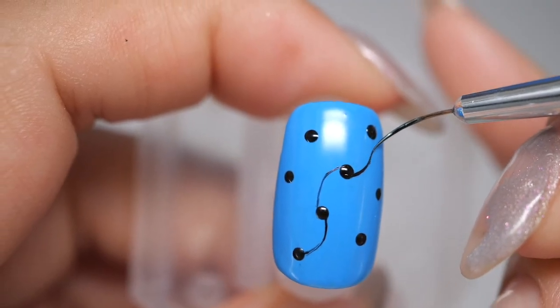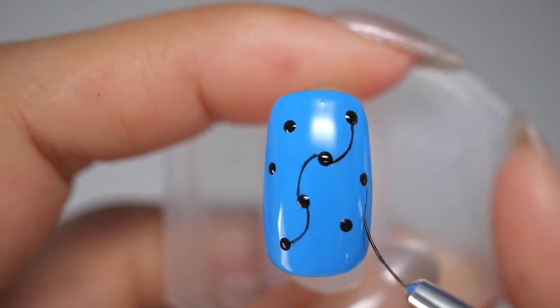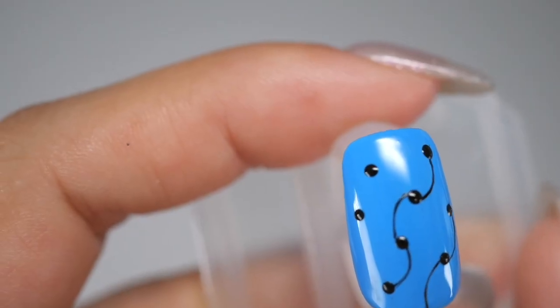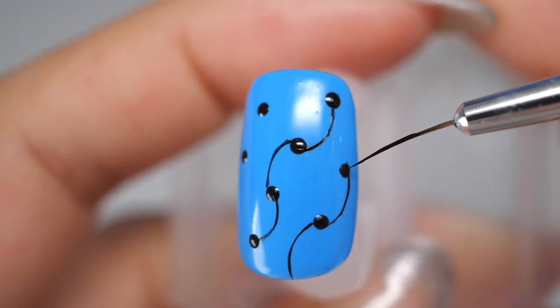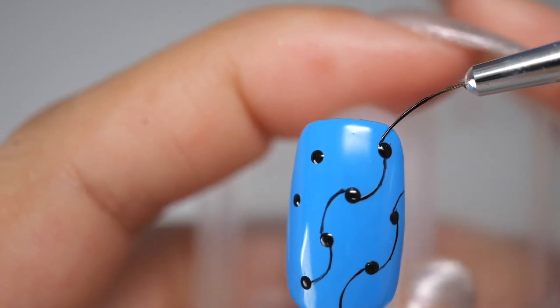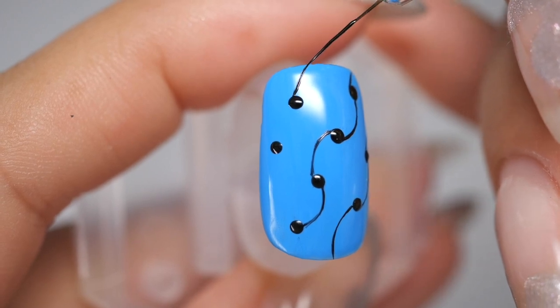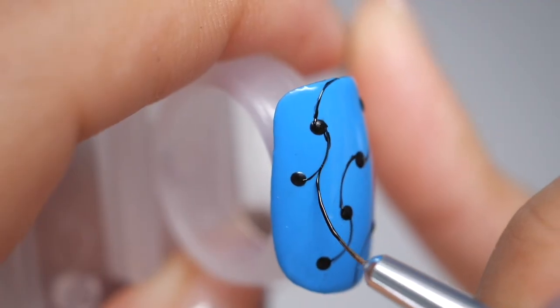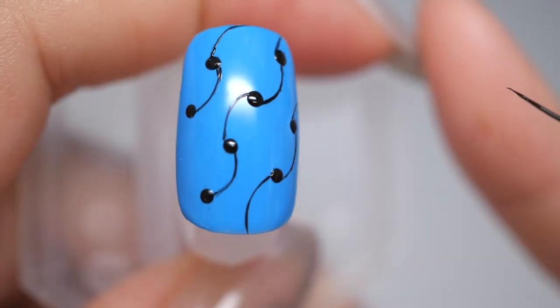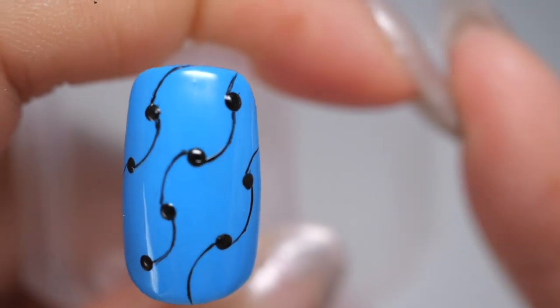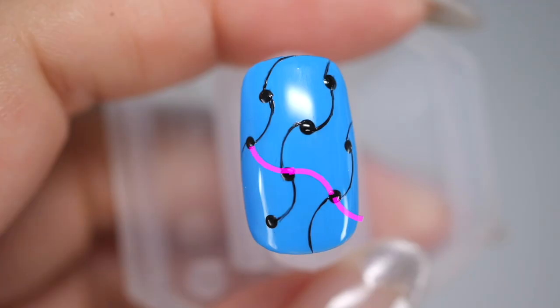It is also recommended to use liner gel when drawing this black line. As the name suggests, liner gel is a gel specialized for drawing thin lines. Once you have drawn a line, now draw from the upper left to the lower right in the opposite direction from the previous step.